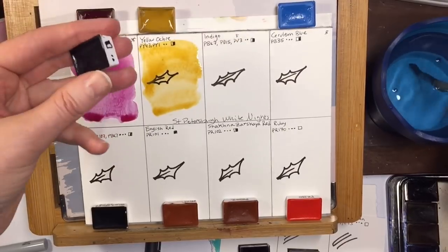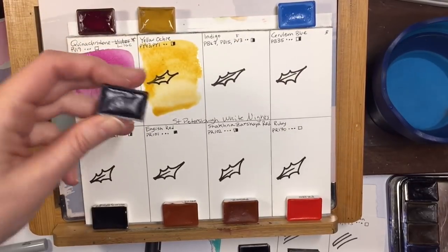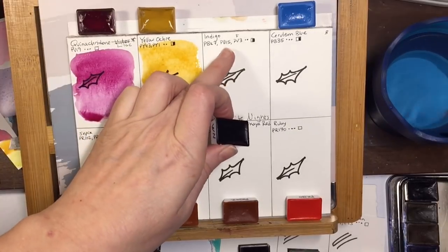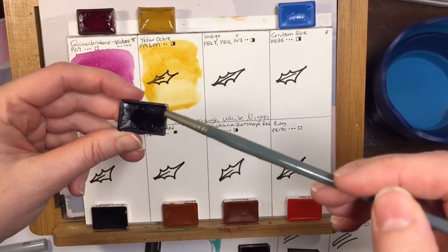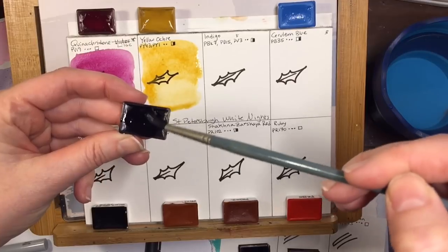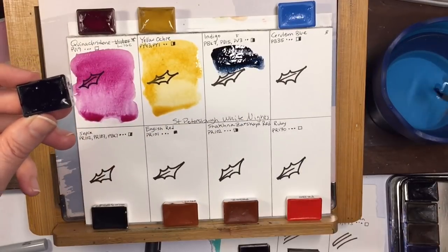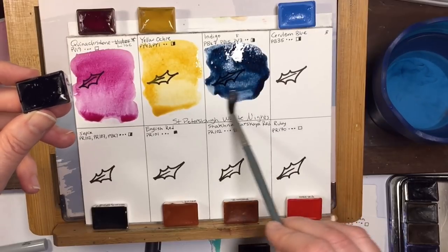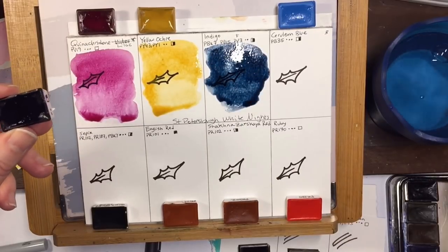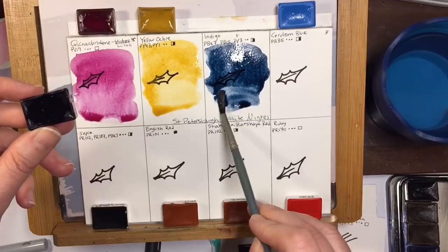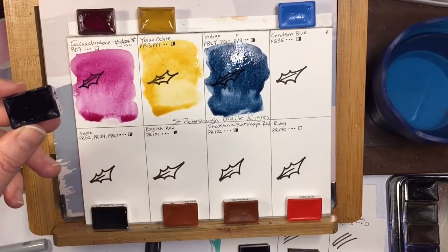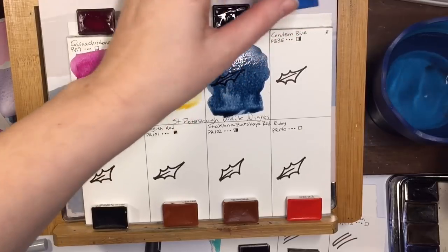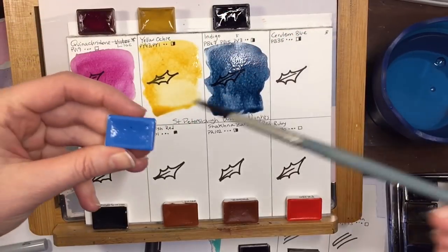And this indigo also has a PV3. It's PBK7 which is a black and PB15 which is a phthalo blue color and PV3 is a violet which is fugitive. So I'm not sure why they did that but it's a gorgeous indigo. Very blue. They didn't even need the PV3 in there. So I really like that for the dark blue aspect.